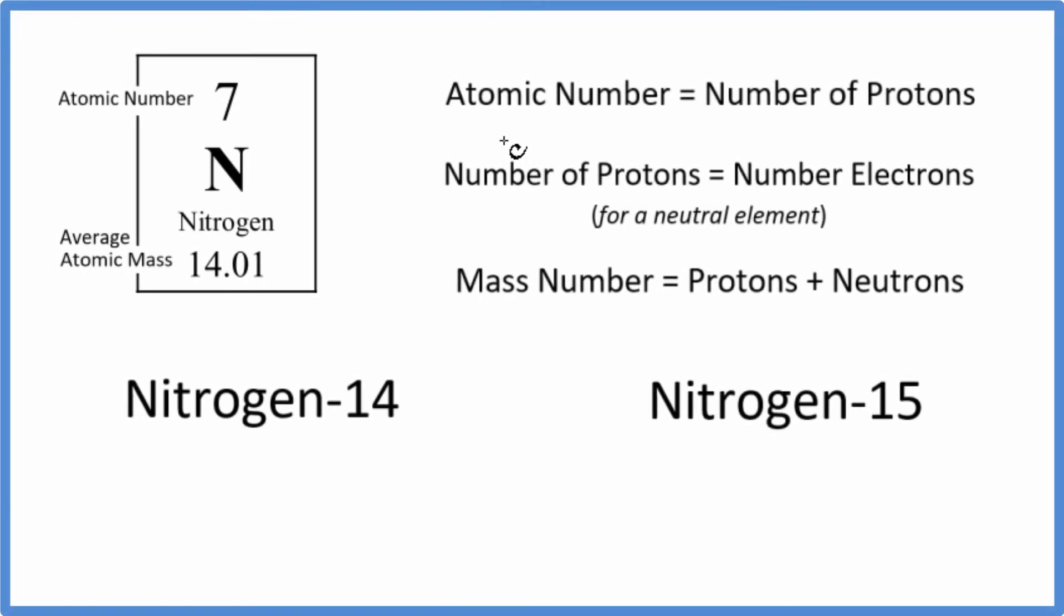In this video we'll write the isotope notation for nitrogen. It's also called the nuclear notation or isotopic notation. So first we have what's called hyphen notation. This is our hyphen here.